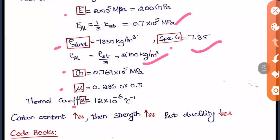Poisson's ratio of steel is 0.286; generally you can use 0.3. The thermal coefficient alpha is 12 × 10⁻⁶ per degree Celsius, and this is the same for concrete — that is why we mix steel with concrete. An important point: as carbon content increases, the strength of the metal increases. But as strength increases, toughness increases, and when toughness increases, ductility decreases.